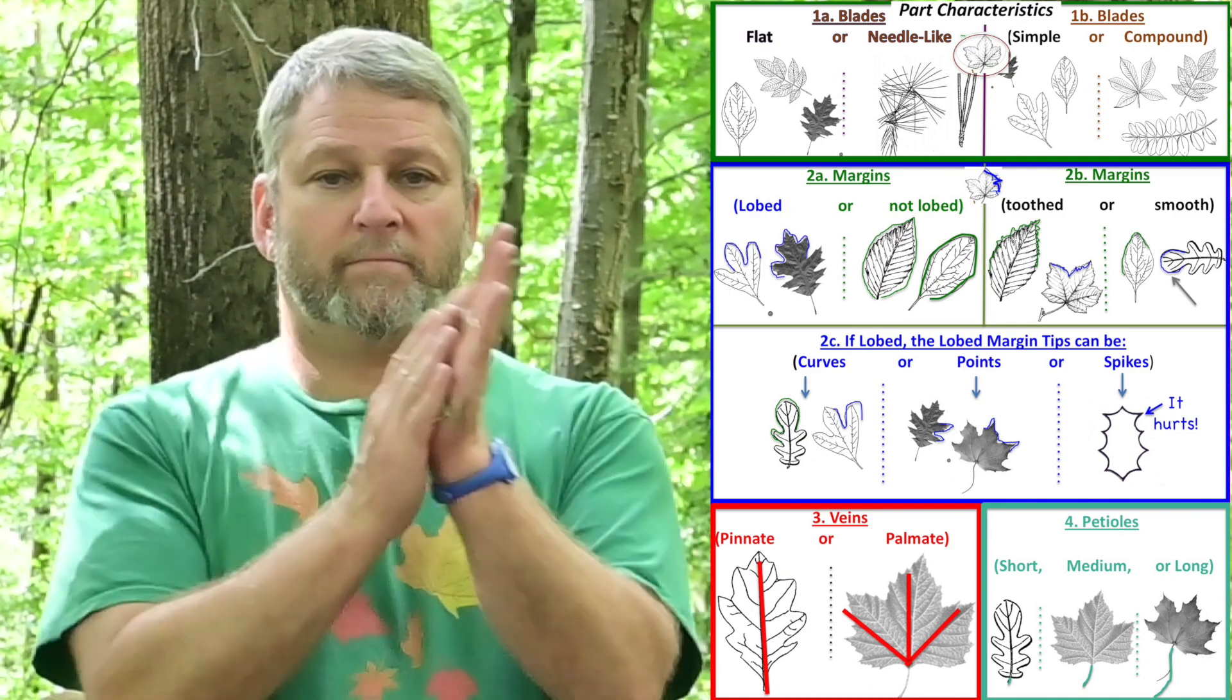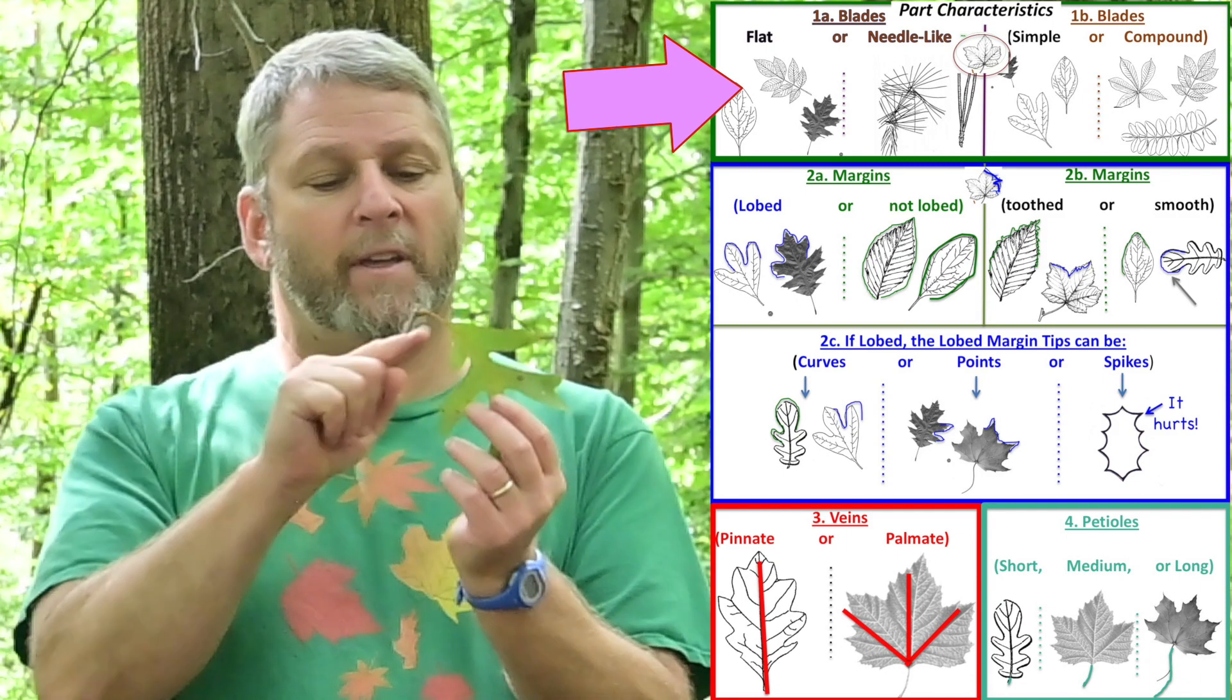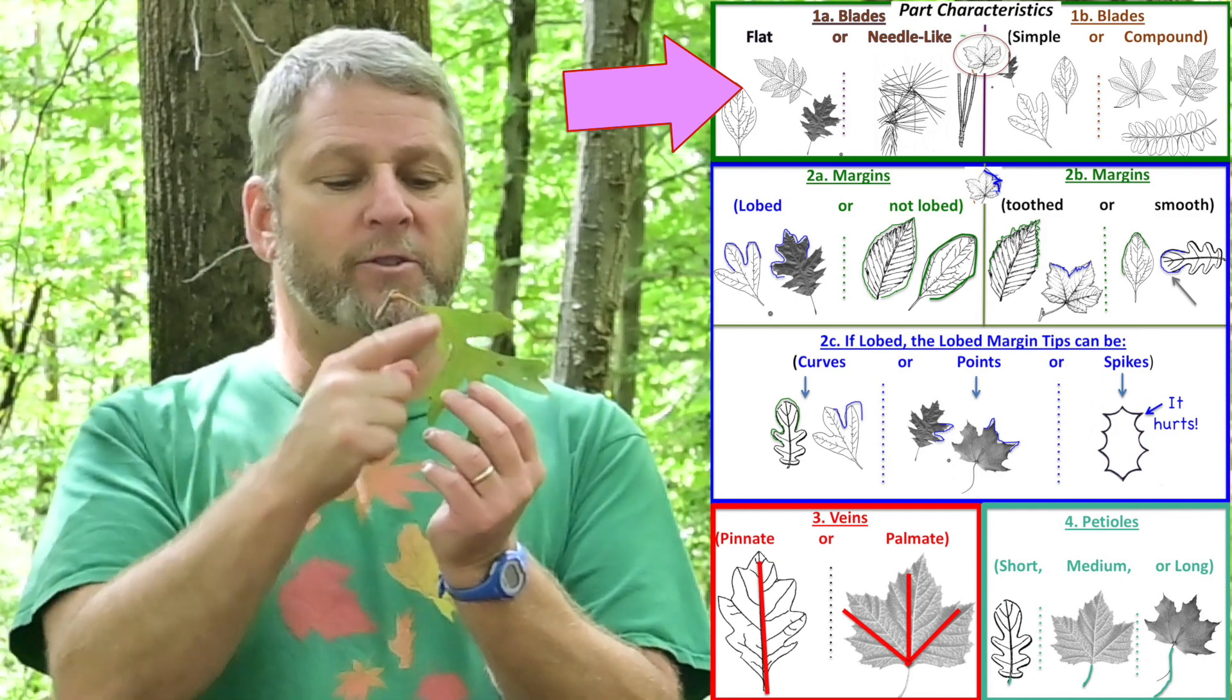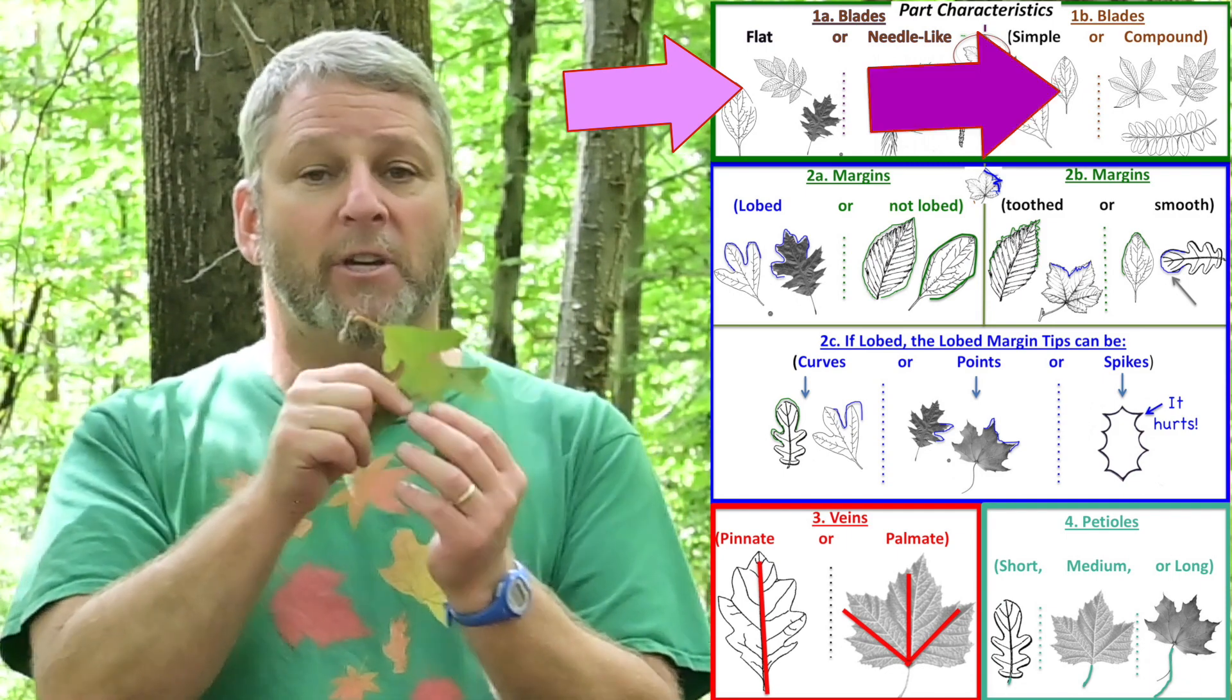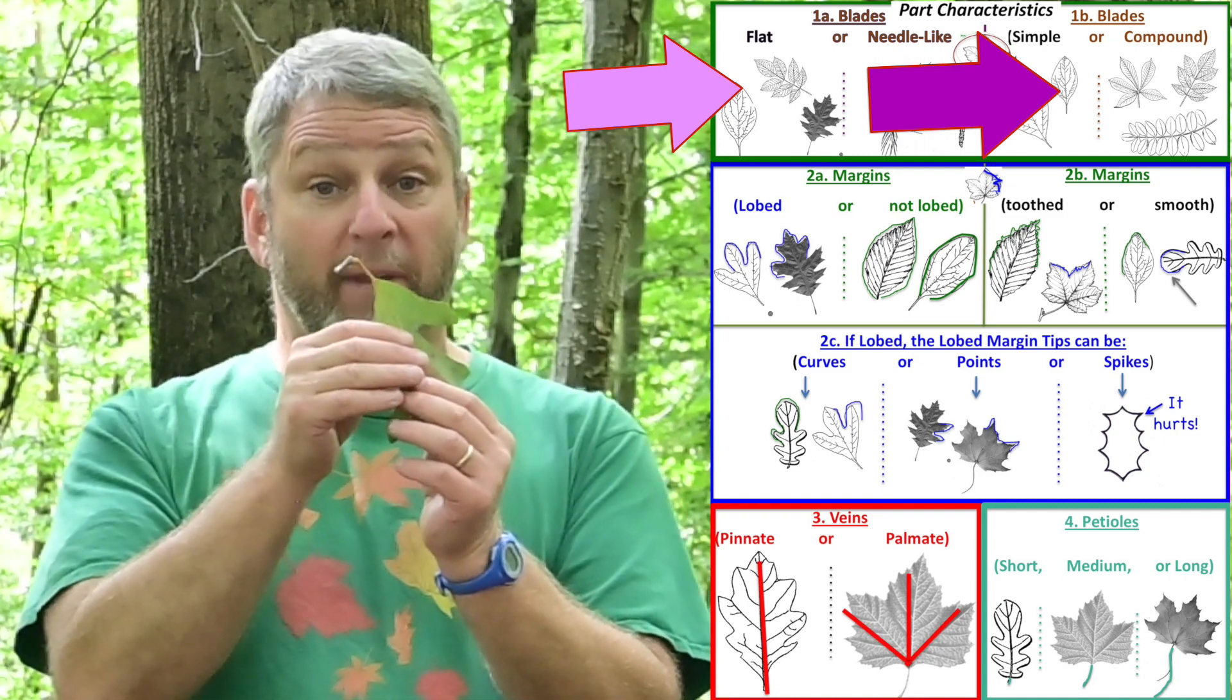This leaf has a blade that's flat as a pancake. The petiole is attached to wood and there's only one blade attached to the petiole. So it's a simple blade, not compound. Flat, simple blade.